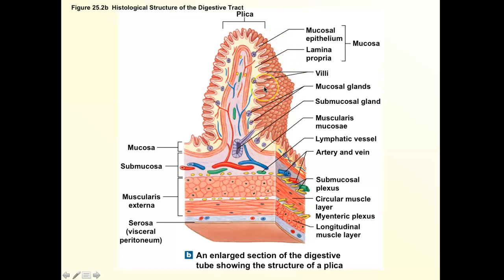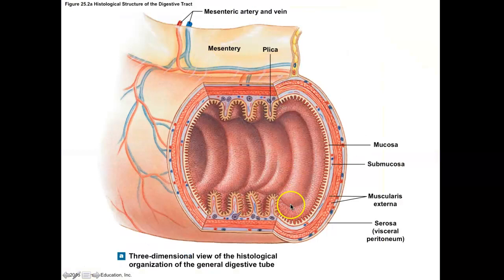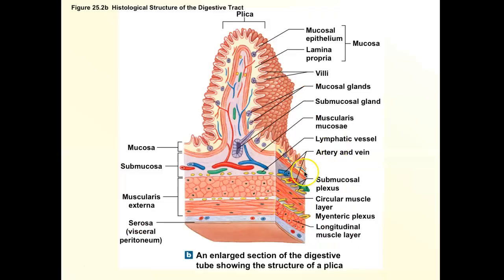We're in the small intestine, whose main job is to absorb nutrients. You want as much surface area in contact with the liquefied food as possible. The small intestine has three features for that: plica increase surface area, villi — those little finger-like projections — increase surface area, and the third structure is microvilli. Every single epithelial cell lining the villi will have microvilli, though they're too small to see here.